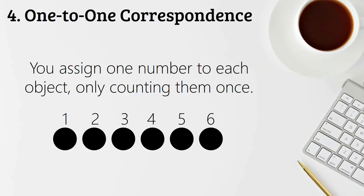The fourth strategy we're going to be talking about today is one-to-one correspondence. And that one is when you assign one number to each object and you're only counting them once. So six circles would be one, two, three, four, five, six, and you can use different strategies when you're using one-to-one correspondence. So sometimes we push the counters as we're counting them. Sometimes we pull them towards us. You're touching each number, each object as you count them.